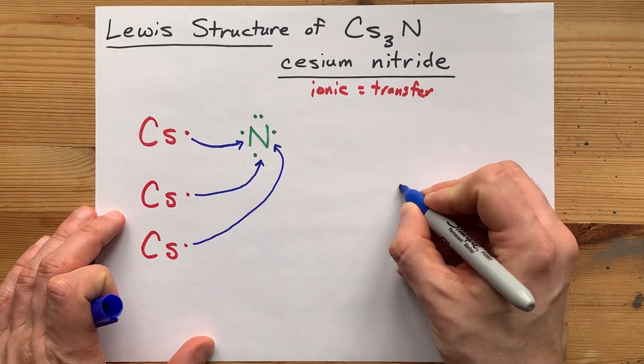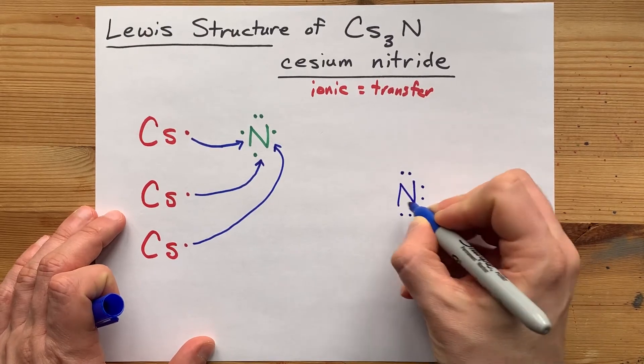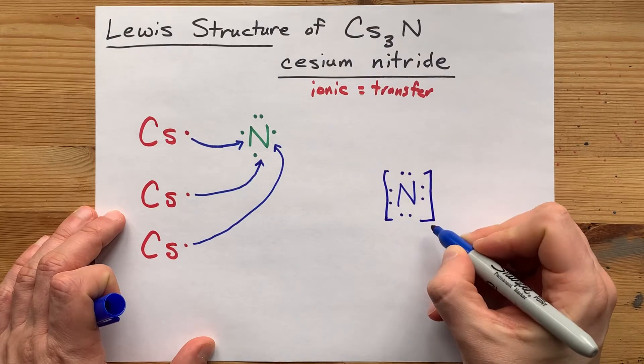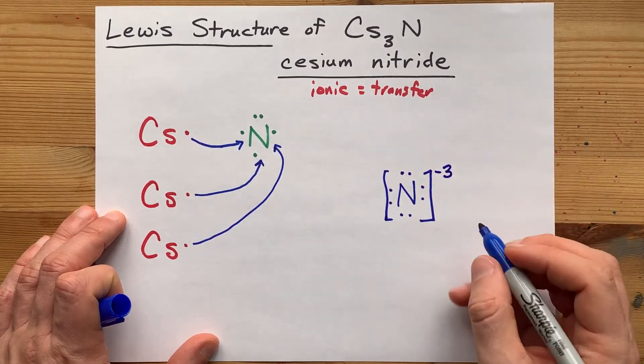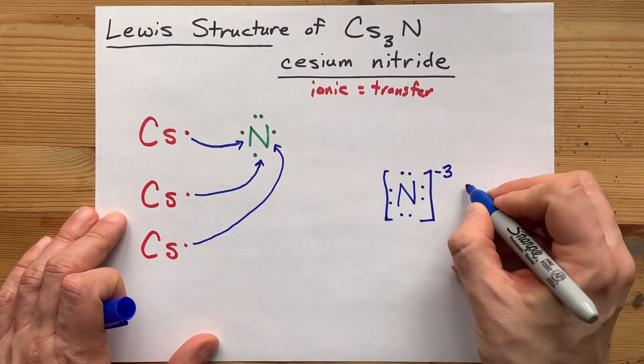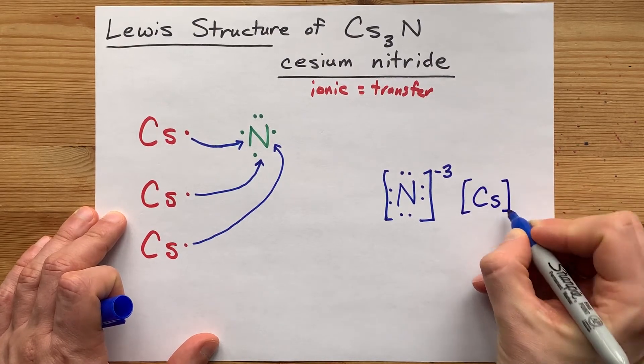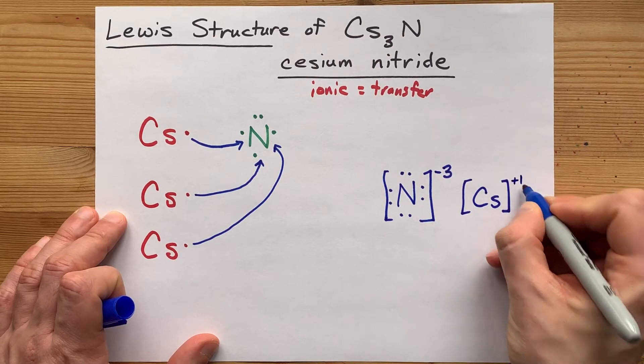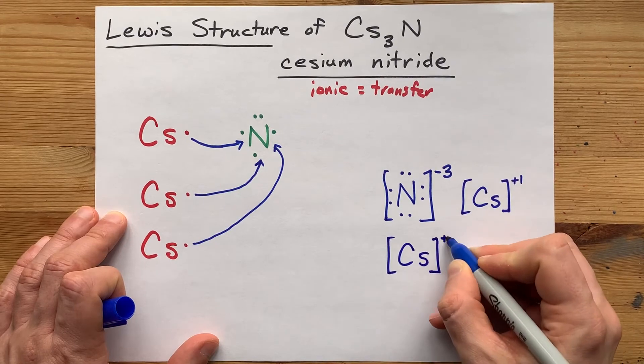To draw the full Lewis structure, I want you to now draw nitrogen with a full eight electrons in its outer shell. That's three more than it brought initially, so it has a minus three charge. Now you need to draw three cesium atoms, but each of them gave away its one valence electron, so don't draw any electrons around them. And they each have a plus one charge.